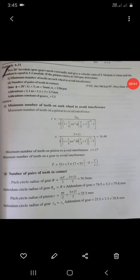Now problem 10, that is example 6.31. Two envelopes mesh externally with velocity ratio 3. Module is 3 mm, addendum is 1.1. Module of the pinion rotates as 1.1.